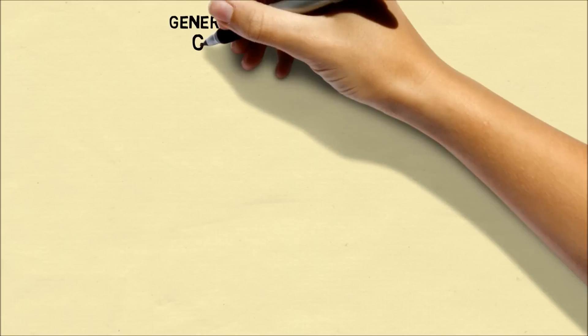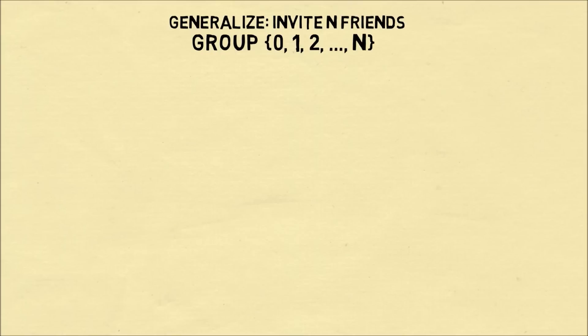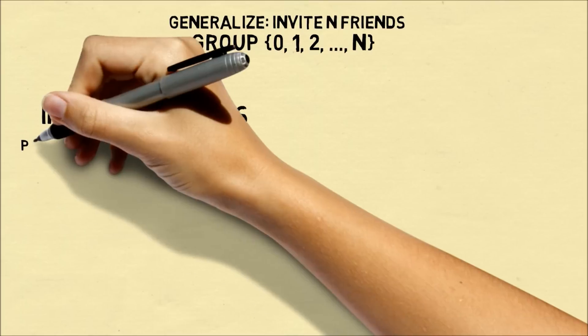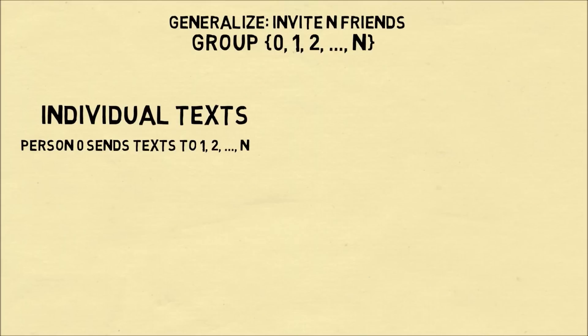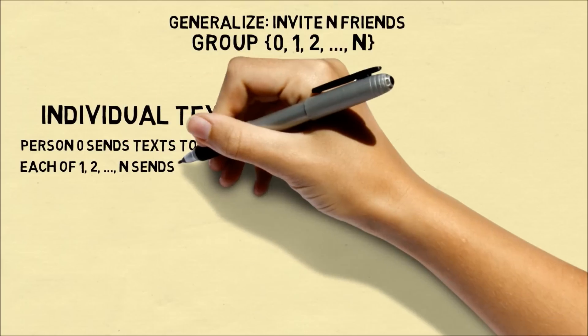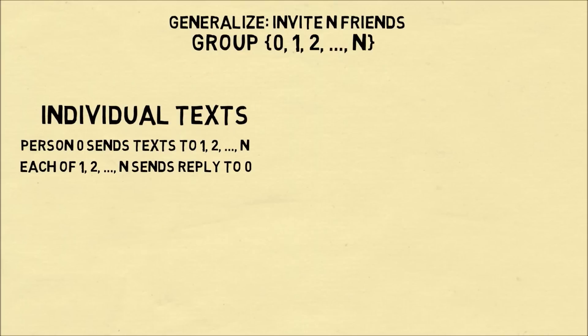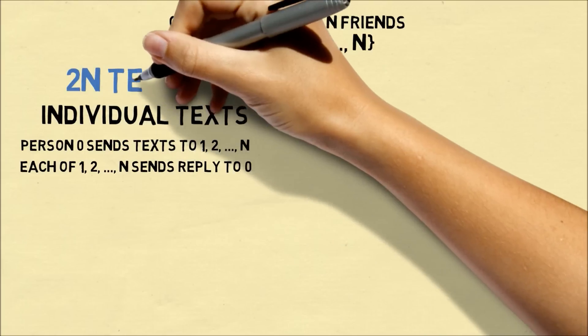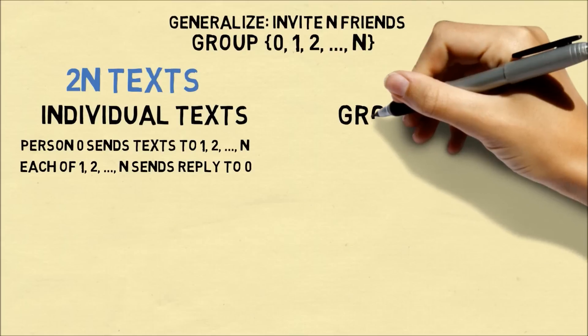In general, we can imagine inviting n friends. We can index this as a set of zero to n friends. If you were to organize it by individual texts, then person zero would send texts to each person in the group and each of those people would respond back to zero. This is a total of 2n texts sent within the group.